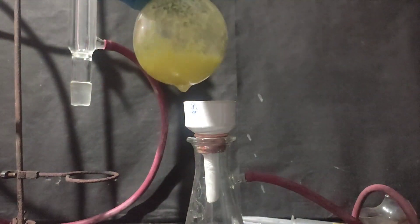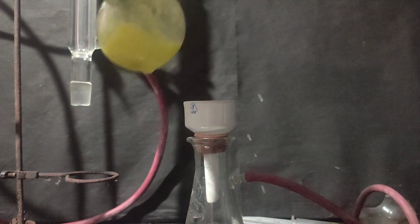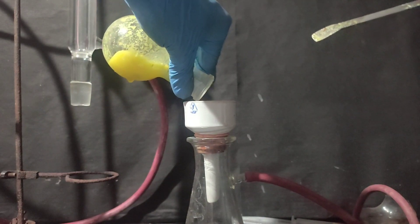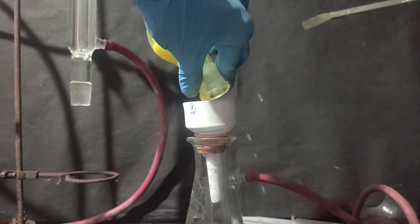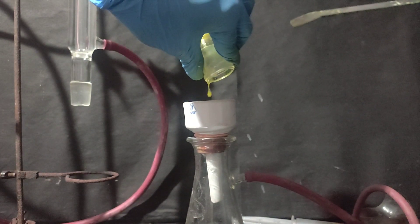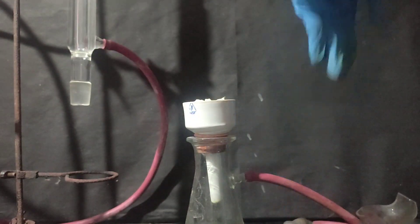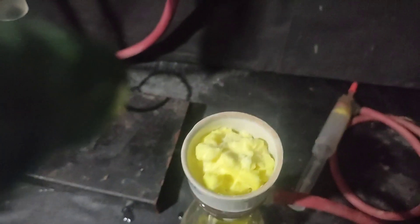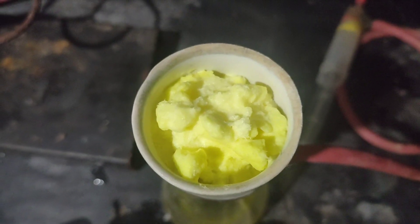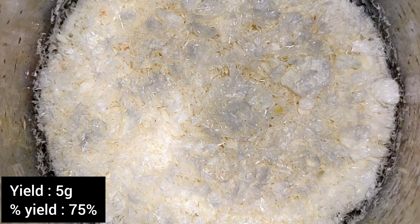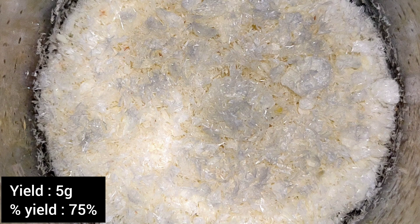Then, I filtered the crystals of meta-dinitrobenzene using vacuum filtration. This is the recrystallized meta-dinitrobenzene. After drying, the final yield came out to be 5 grams, which corresponds to a percentage yield of 75.75%.